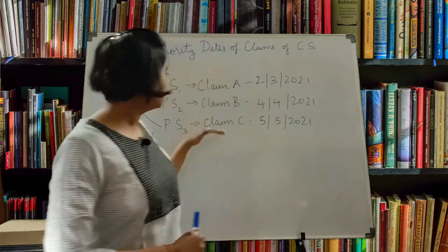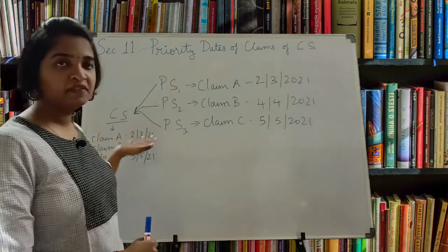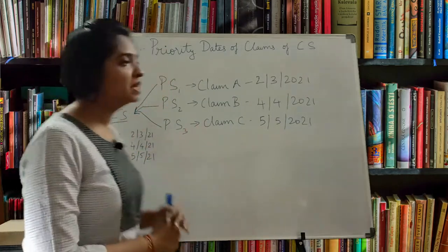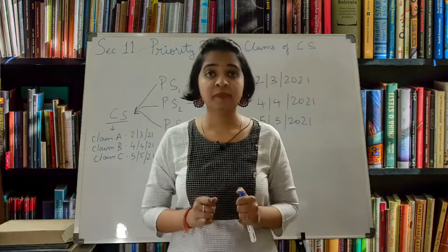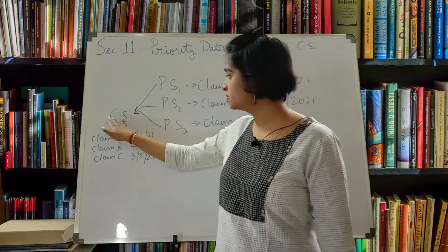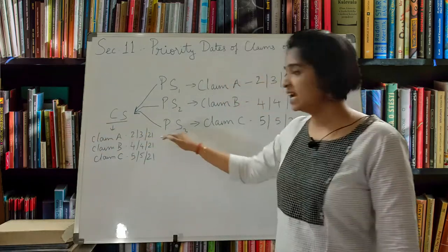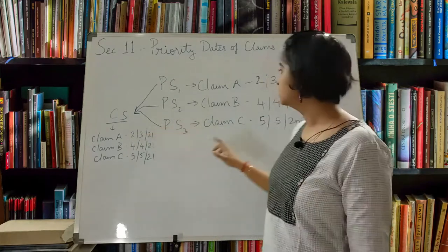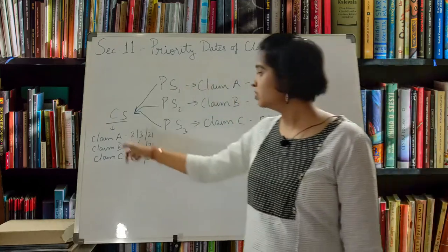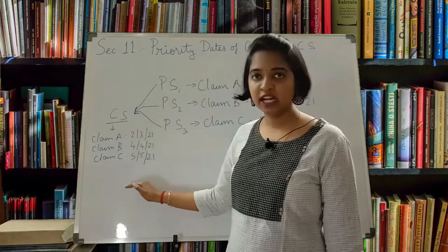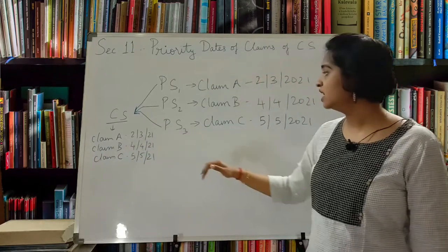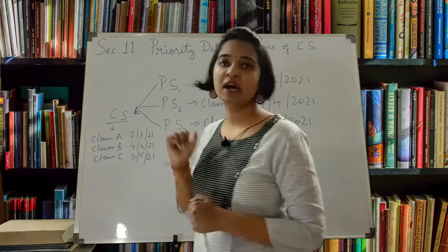All three provisional specifications are for a single invention. So altogether you are filing one complete specification. When it comes to this complete specification, since there is a priority date for each claim, Claim A will have a priority date of 2-3-2021, Claim B's priority date will be 4-4-2021, and Claim C's priority date will be 5-5-2021. Each claim gets a separate priority date.